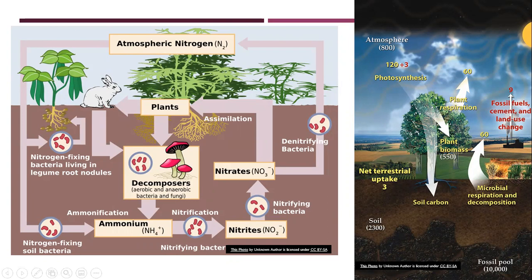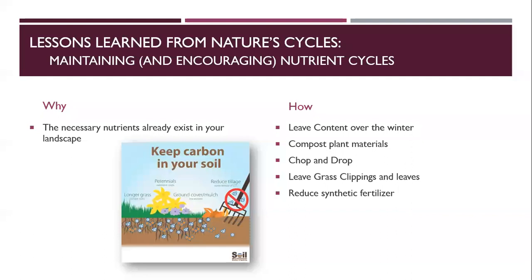So why do these cycles matter? They explain a lot and give us insights into how to manage our landscapes for soil conservation. A lot of how we're managing these cycles is not cyclical at all — it's very linear. Think about how we manage our lawns: we add fertilizer, the grass grows, we cut it, bag it, and the city takes it away. We've just taken that carbon and nitrogen out of the soil and removed it instead of leaving clippings to return back in.